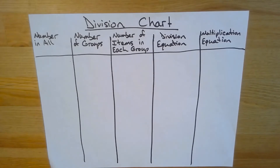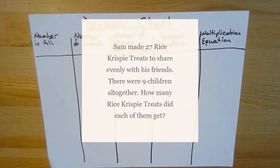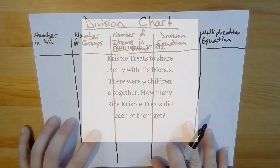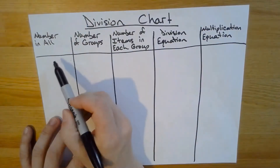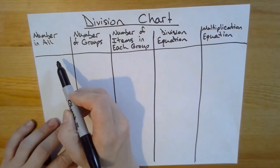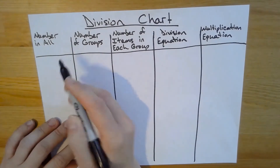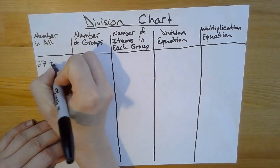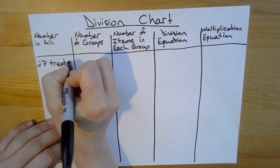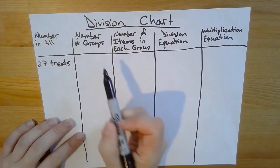Sam made 27 Rice Krispie Treats to share evenly with his friends. There were nine children all together. How many Rice Krispie Treats did each of them get? Let's use our division chart to enter the information we know from the problem. Do I know the number I have in all? Yes, I know I have 27 Rice Krispie Treats, so I will enter that here and I'll just call them treats.